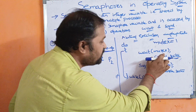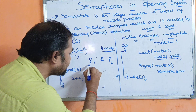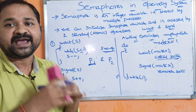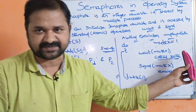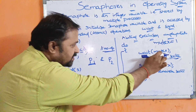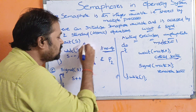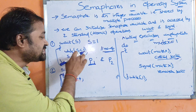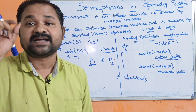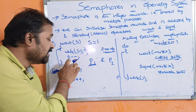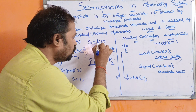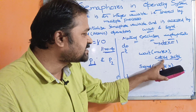Now let us execute the wait operation. Assume P1 executes wait(mutex) first. The initial value of mutex is 1, so S = 1. While S is less than or equal to 0: 1 is less than or equal to 0 — condition is false. Since the semaphore is positive, we decrement S by 1: 1 minus 1 equals 0, so S is now 0. P1 can now enter into the critical section.